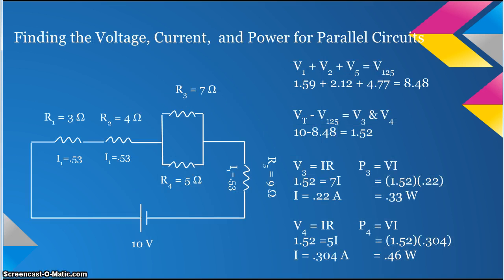From video 1, you also learned that parallel circuits have the same voltage at each resistor. Add up the voltage in R1, R2, and R5, and subtract it from the total voltage to get 1.52, which is the voltage for V3 and V4.